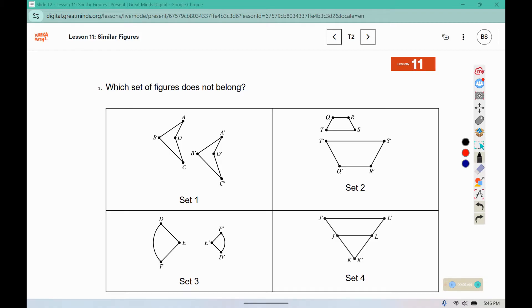Now there are other arguments that you can make for a different set not belonging. You could say that this was an enlargement. This one was an enlargement. And this one was the same size. So set three is the only one where it was a reduction. But you need to come up with which set does not belong and then explain why.